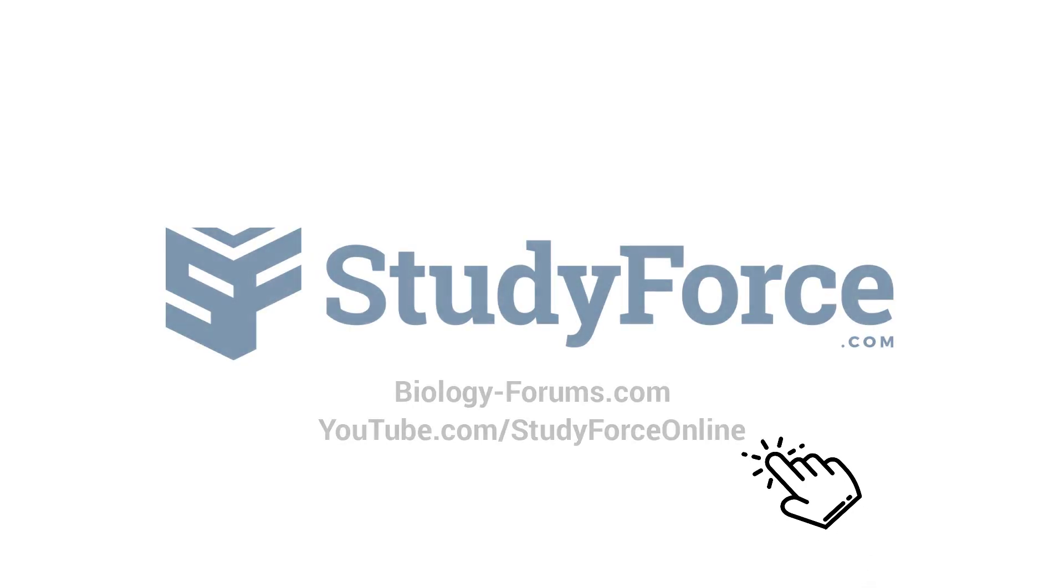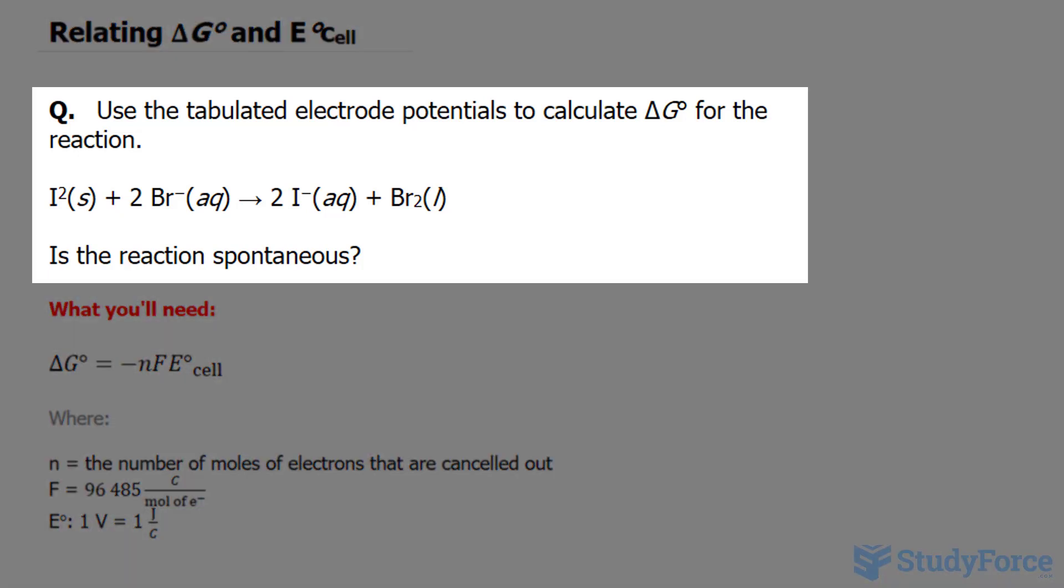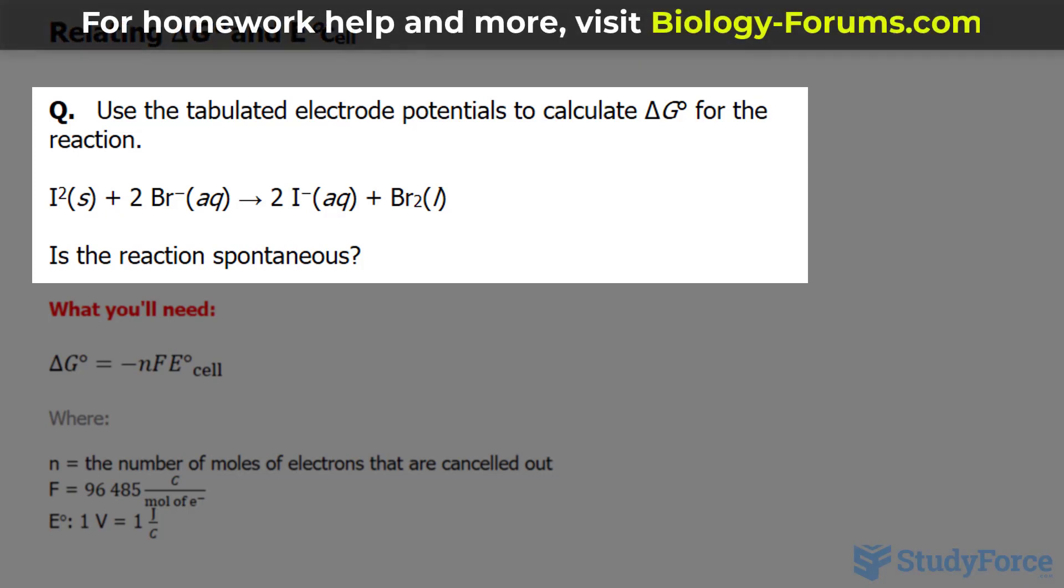In this lesson, we'll discuss the relationship between the change in standard Gibbs free energy and standard cell potential. The question reads: use tabulated electrode potentials to calculate delta G for the reaction shown underneath. Is the reaction spontaneous?